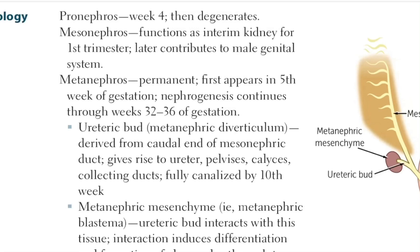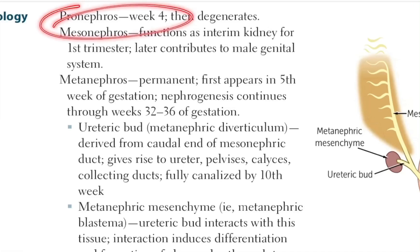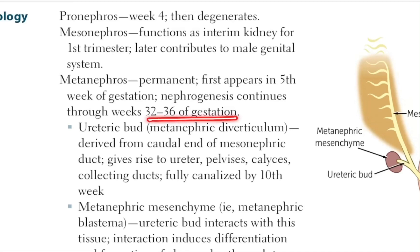The metanephros is the permanent kidney — it grows into the permanent kidney. It appears after the degeneration of the pronephros, that is in week 4, and first appears in the 5th week. This nephrogenesis, that is the growing of the kidney, takes place till the 32nd to 36th week of gestation.